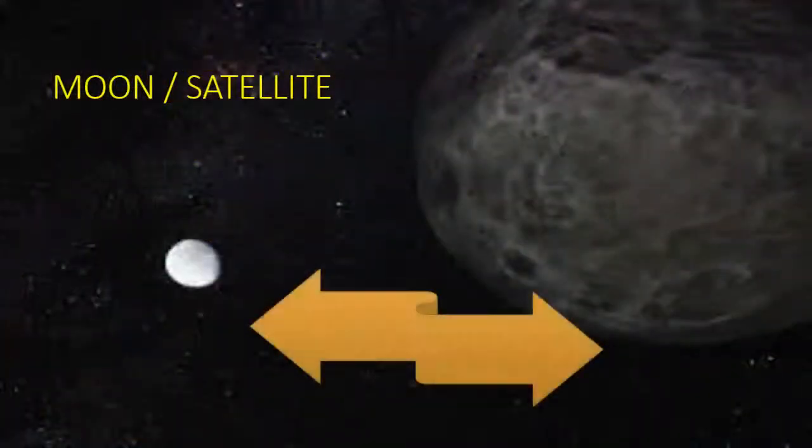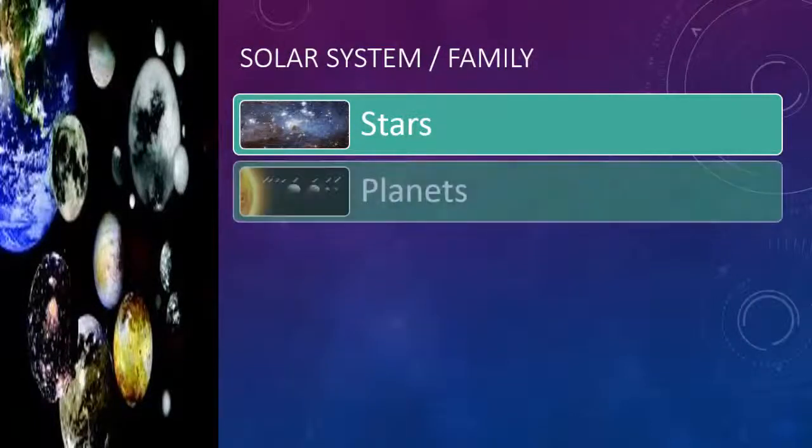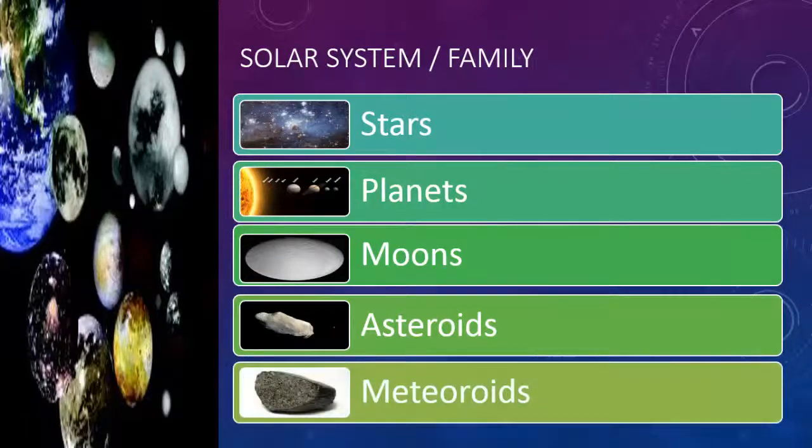Satellites are the companions of planets. Solar System Family: Star, planets, moons, asteroids, meteoroids.